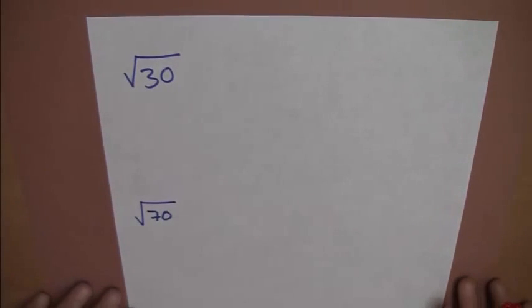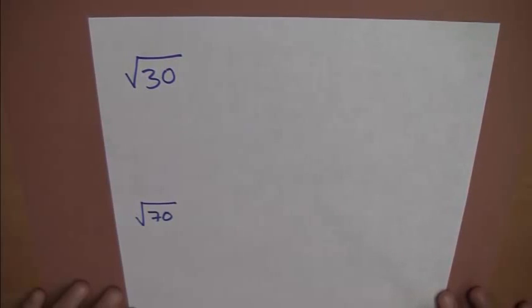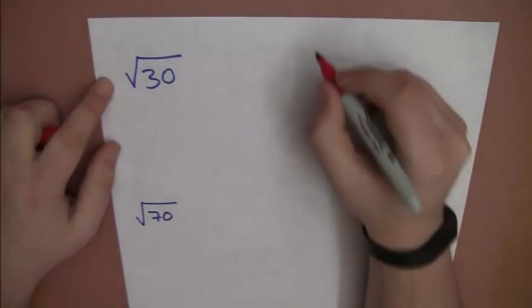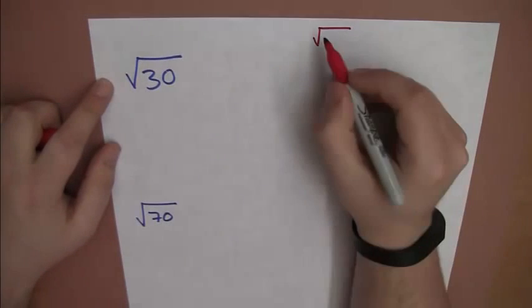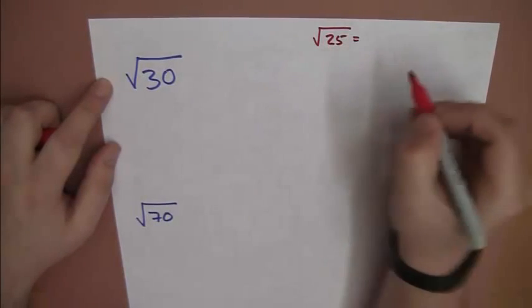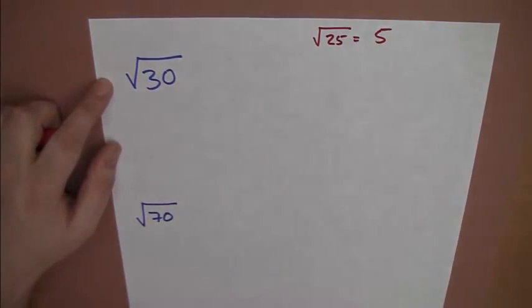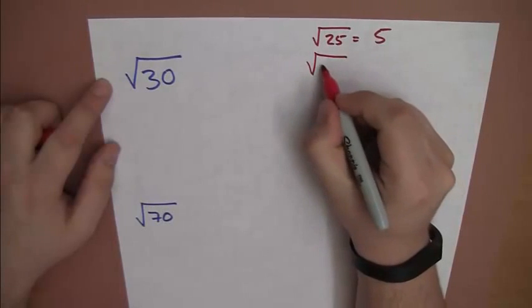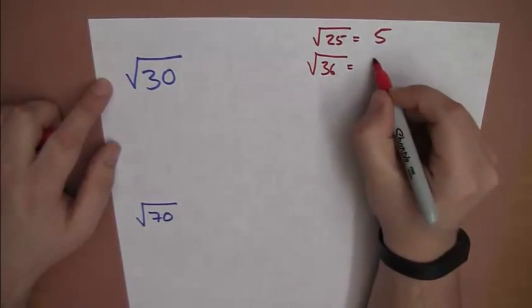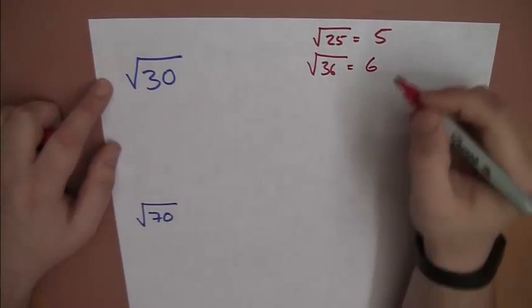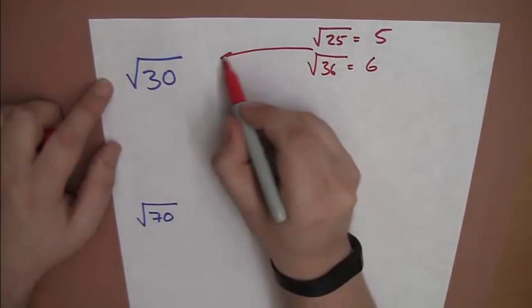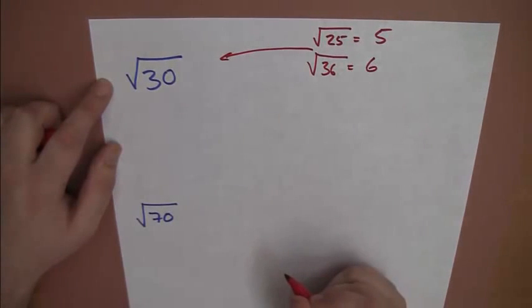So, having a look at the square root of 30. Now, the ones that I know, roughly around the 30, I know that the square root of 25, well that's 5, I know that one. I know that the square root of 36 is 6. And the square root of 30 fits somewhere just in between those.